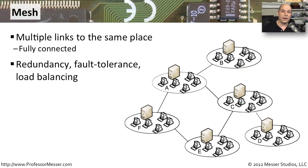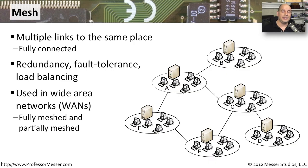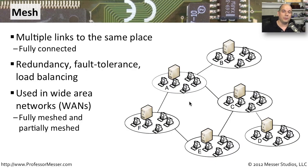With multiple links, you have twice as much bandwidth available to send your data back and forth. It's very common to see a meshed network on a wide area network. We see fully meshed and partially meshed networks so that you can connect some sites via multiple connections, some sites via a single connection, and blend together differences in how you want to connect between point A and point B.